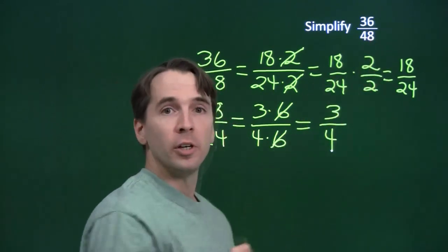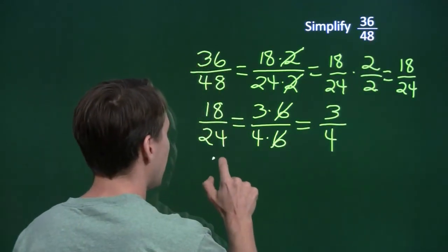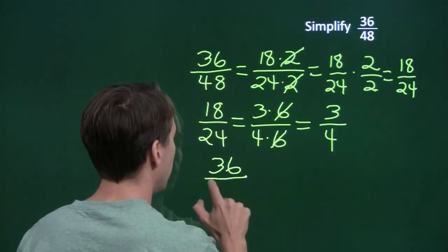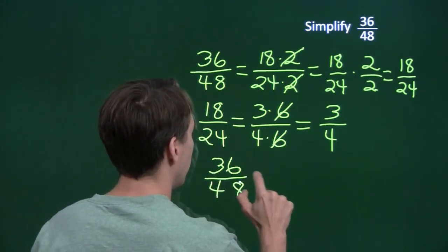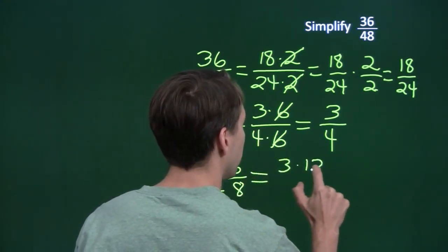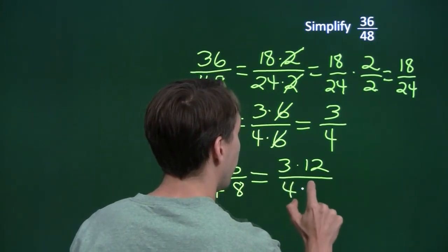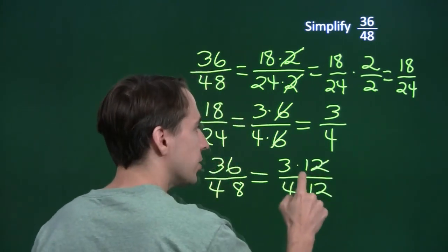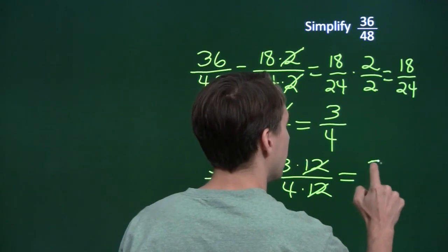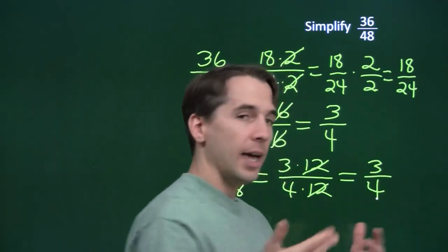We could have just canceled a 12. 36 and 48, they have a common factor of 12. 36 is just 3 times 12. 48 is just 4 times 12. We cancel out the common factor of 12, and we're done.